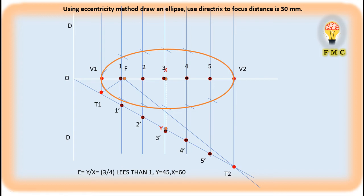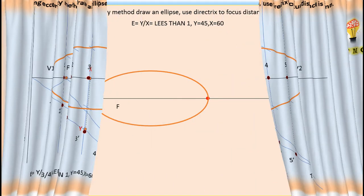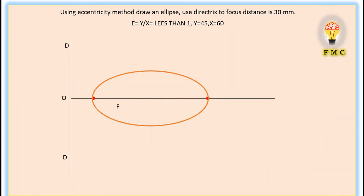Next slide — we will see how to mark the tangent and normal for this ellipse. Since this slide is full of numbers and lines, we will get confused. So we will go to the next slide. It is the same problem — I have already made the ellipse. Now we should go and see how to draw the tangent and normal.